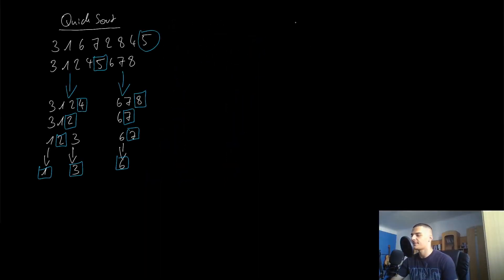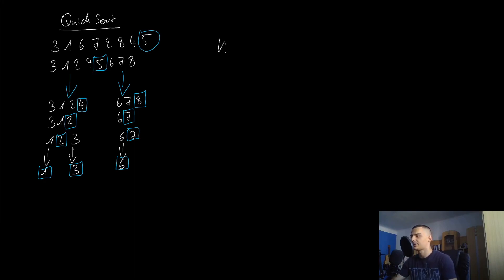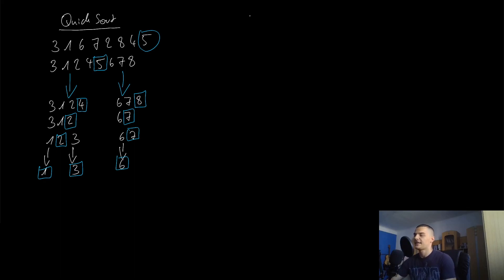When it comes to the runtime complexity of quicksort, it might be a little confusing because you can actually end up with quadratic time. This might be confusing because we're talking about divide and conquer and the most efficient algorithm — so how can it end up with quadratic time? Usually it does not. This is just the case in edge cases. Usually you have pseudo-linear time: O(n log n), and also with smaller constants compared to merge sort on average.